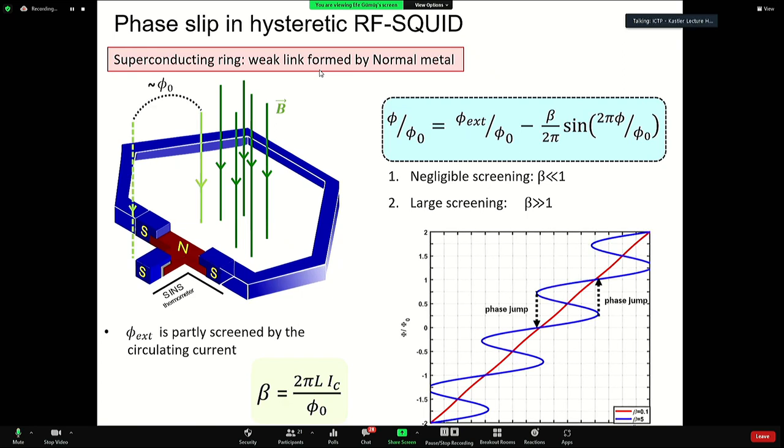This allows us to sweep the external magnetic field up to such a point that if we go further beyond, we have these phase jumps. Which is an irreversible process, and therefore is accompanied by instantaneous dissipation.